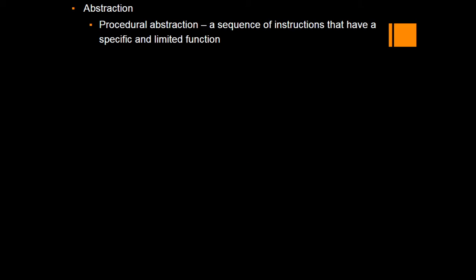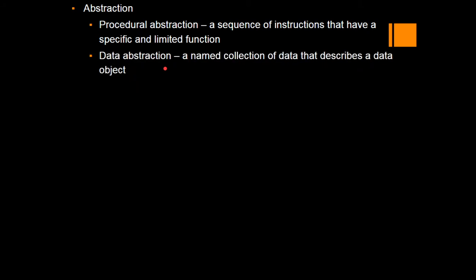Just as in a book, the abstract describes the chapters and what each chapter is going to discuss. There are two types: procedural abstraction and data abstraction. Procedural abstraction is a sequence of instructions that have a specific and limited function, dealt at the top level. Data abstraction is a named collection of data that describes a data object — only the names are mentioned at the abstraction level.